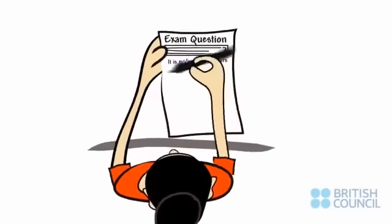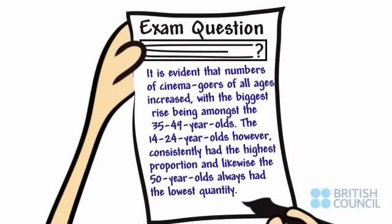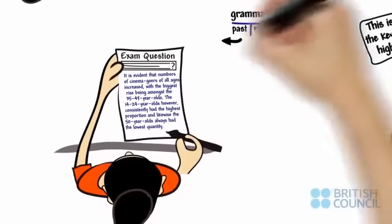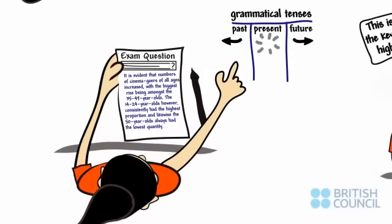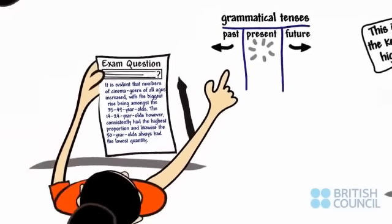After noticing points to be highlighted, she thinks about how she would describe them. She considers the grammatical tenses that are relevant. As this graph covers years in the past, past tense grammar is appropriate to talk about the information. As the graph also has future predictions, she will use future aspects in her writing too.